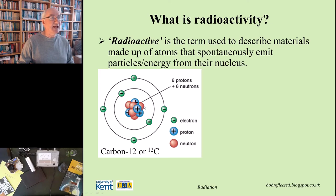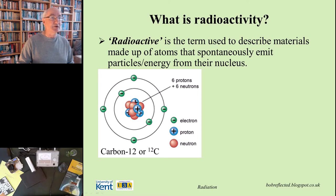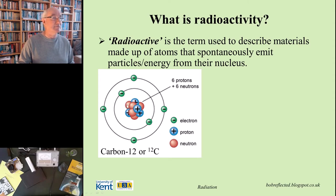The nucleus can also have other particles called neutrons, which have no electrical charge — they are neutral, as their name implies. But they change the mass of the carbon atom. Almost all of the mass of an atom is confined within the nucleus. A proton and a neutron have roughly the same mass, but they are 2000 times more massive than an electron. So electrons make up a really tiny percentage of the mass of a whole atom — pretty much all of it sits within the nucleus.